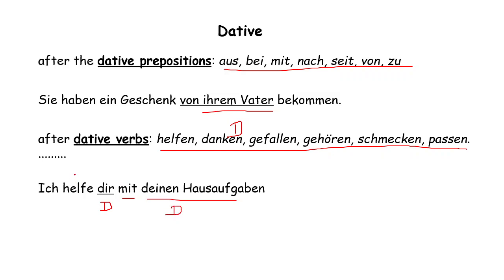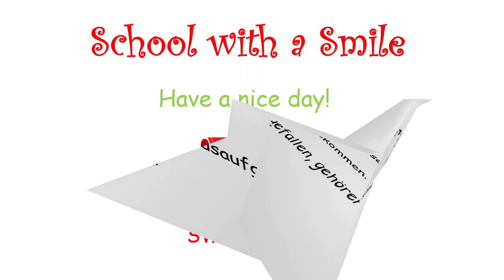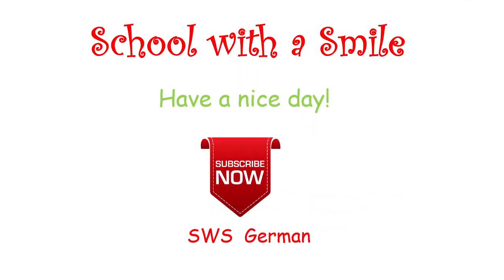So you can easily recognize: if the object is after the verb, check which verb it is. If the object is after a preposition, check which preposition it is. If it is a dative preposition, use dative. If it is an accusative preposition, use accusative. Thank you very much for watching this video. If you have any doubt or concern, just write to us below. Have a nice day. Thank you.